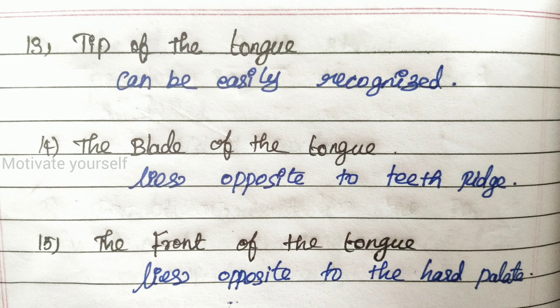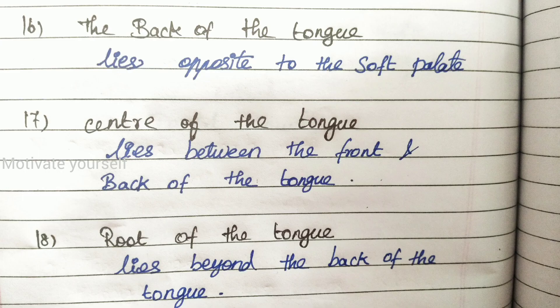Question 13: Tip of the tongue can be easily recognized. Question 14: The blade of the tongue lies opposite to the teeth ridge. Question 15: The front of the tongue lies opposite to the hard palate. Question 16: The back of the tongue lies opposite to the soft palate. Question 17: The center of the tongue lies between the front and back of the tongue.